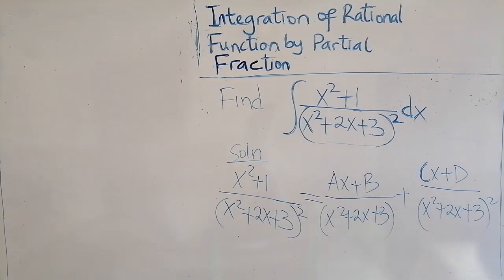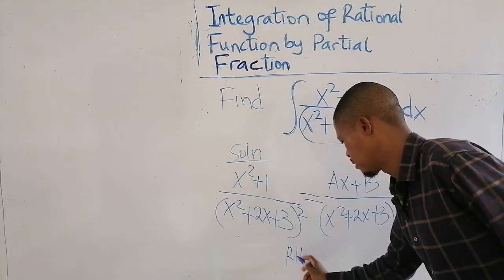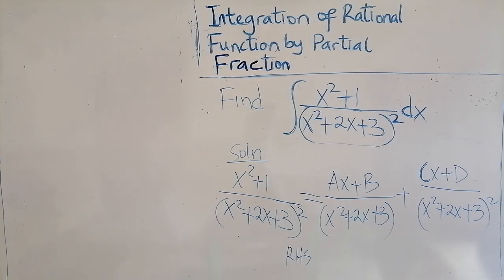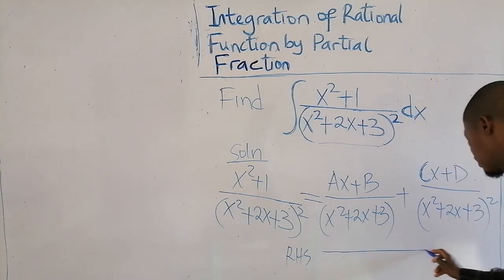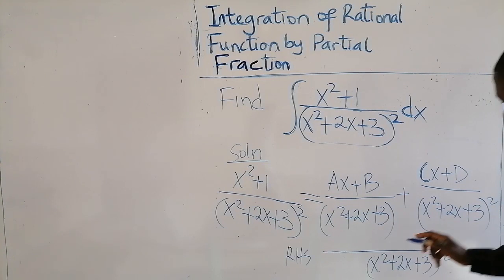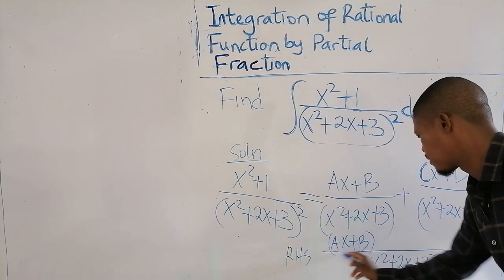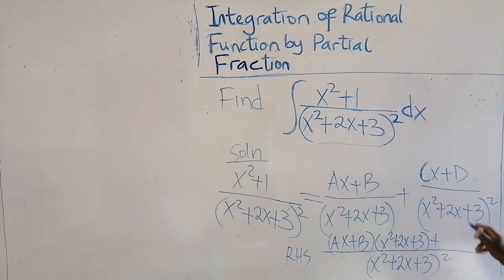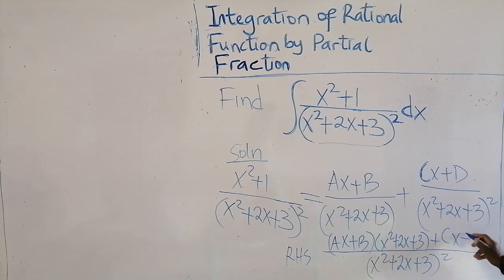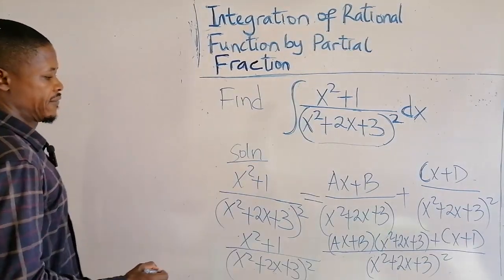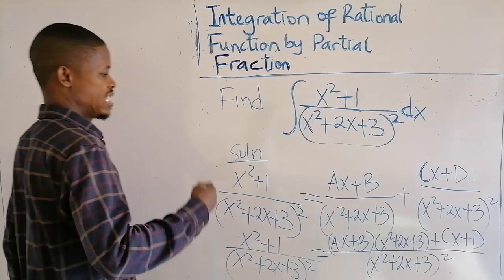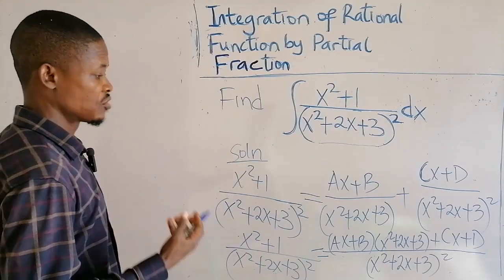What we do now is to multiply through by the common factor. If you don't want to do that, you can work on the right-hand side and express it as a single fraction. If you do that, we're going to have ax plus b times one of these, plus the other term. We have expressed the right-hand side as a single fraction.